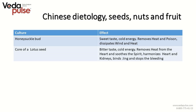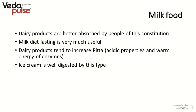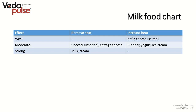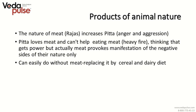According to traditional Chinese medicine, honeysuckle buds and cores of lotus seeds are beneficial for this constitution. Pitta people are good at digesting milk protein; milk diet fasting is recommended. Remember that dairy products tend to increase Pitta due to acidic properties and warm energy of enzymes. Products that remove heat include unsalted cheese, cottage cheese, milk, and cream. Products that increase heat include clabber, yogurt, and ice cream. Pitta people love meat, but meat only provokes manifestation of the negative sides of their nature — meat increases fire, so it is necessary to reduce its amount.